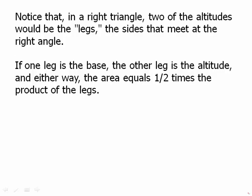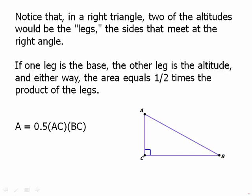Notice that in right triangles, two of the altitudes are the legs — the sides that meet at the right angle. If one leg is the base, the other leg is the altitude. Either way, the area equals one-half times the product of the legs. So it doesn't matter whether we call AC the base and BC the height or vice versa — we get area = ½ · AC · BC. That's how you find the area of a right triangle.